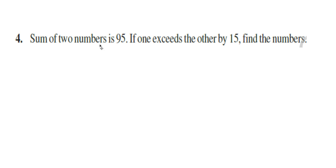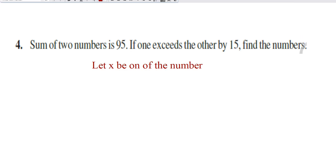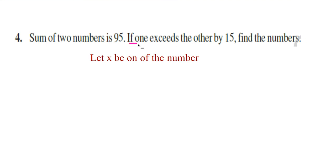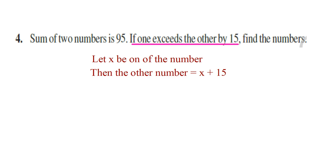Here is question number 4. Sum of two numbers is 95. If one exceeds the other by 15, find the numbers. We have two numbers, so one number we can take as x. Let x be one of the numbers. One number is 15 more than the other number; the other number is x plus 15.